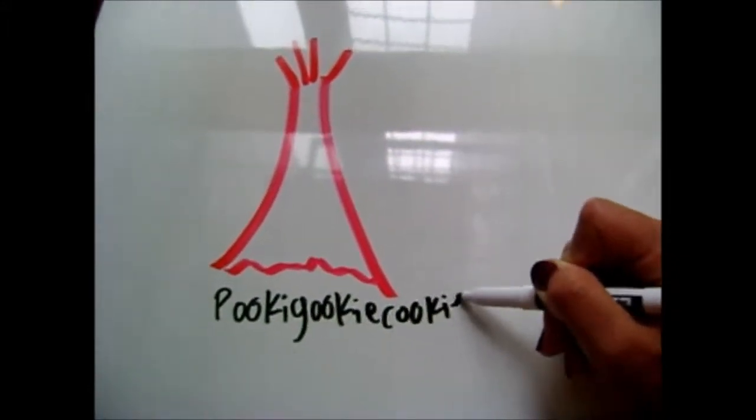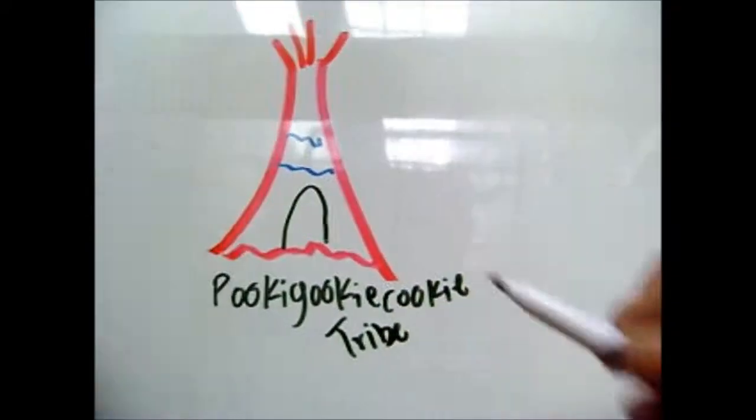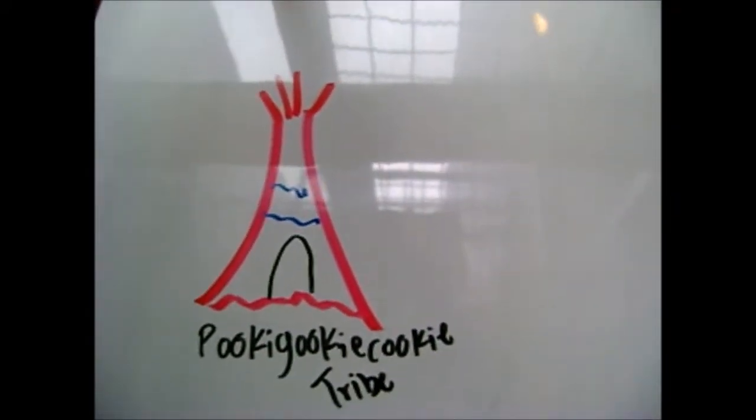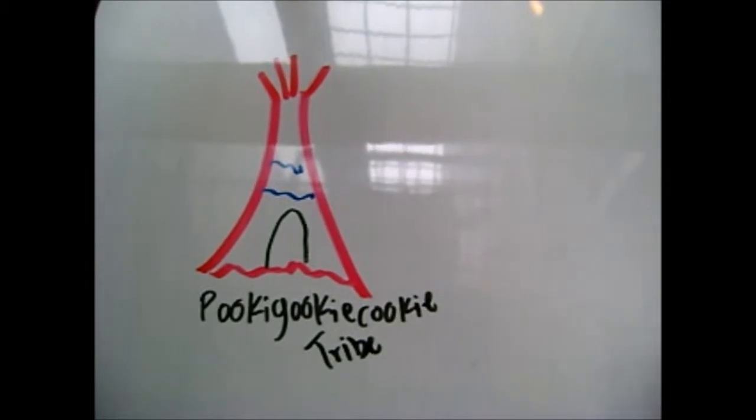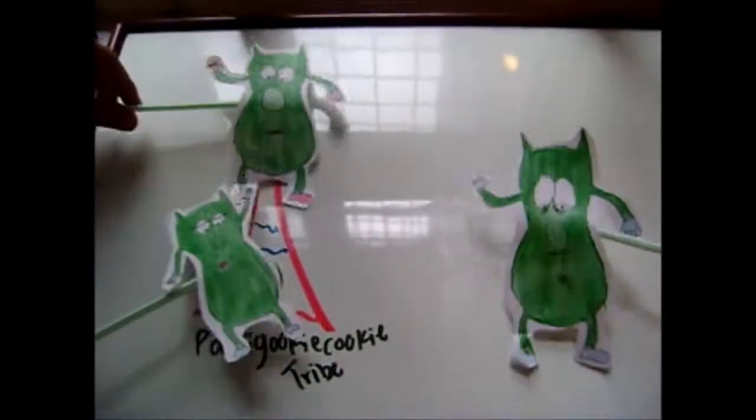It will be explained with a simple and cute story. Maybe not so cute. Once upon a time, four green cahoos lived in a tribe called Pookie Gookie Cookie.